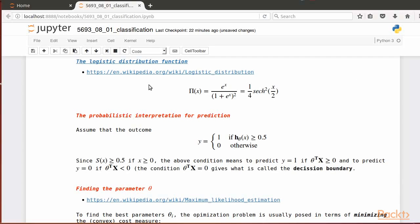It's not casual, as it's formally the cumulative distribution function of the logistic probability distribution function shown here.